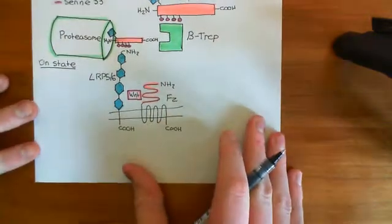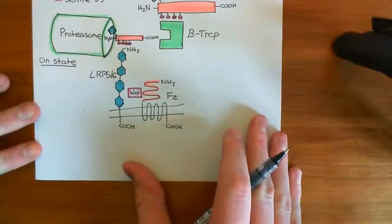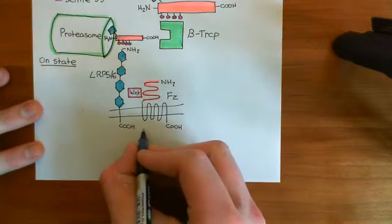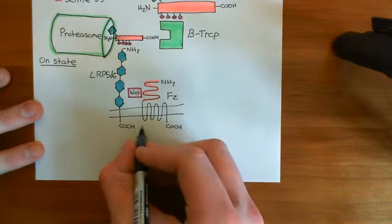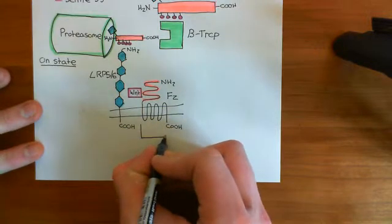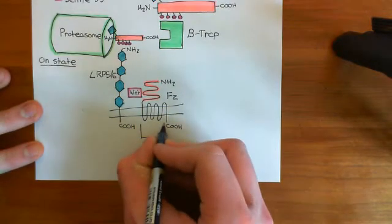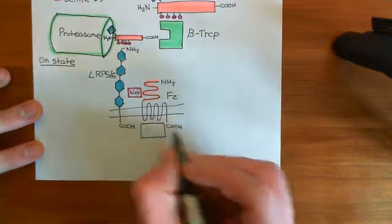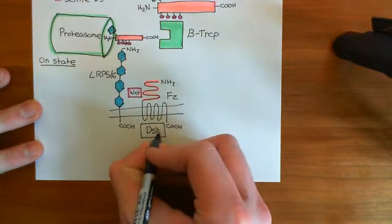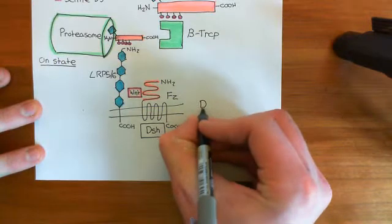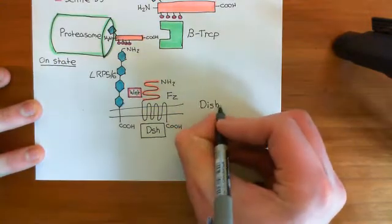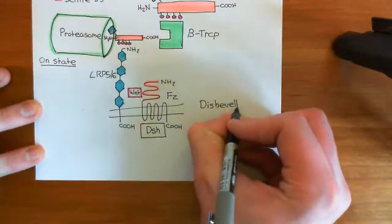So we're now in the on state — the cell has been exposed to the Wnt protein. What's going to happen firstly is that a protein is now going to come and bind to the base of the frizzled receptor, and this protein is known as a dishevelled protein, often abbreviated as DSH.